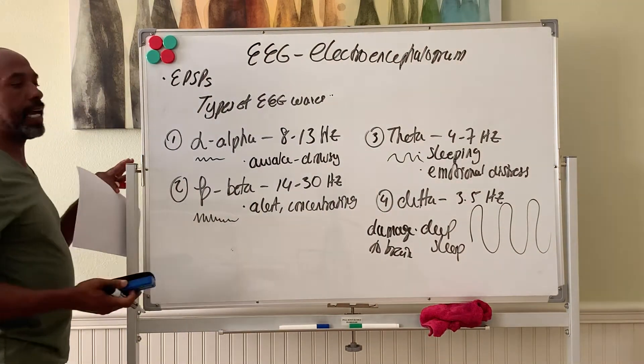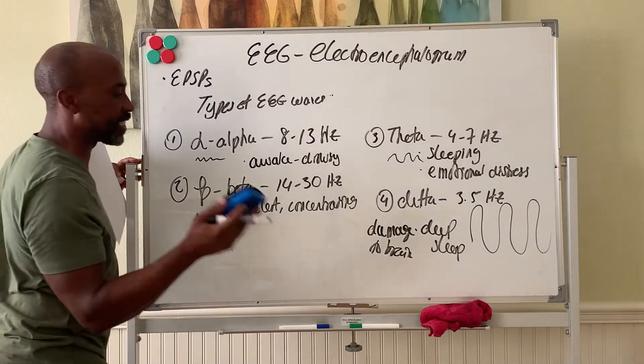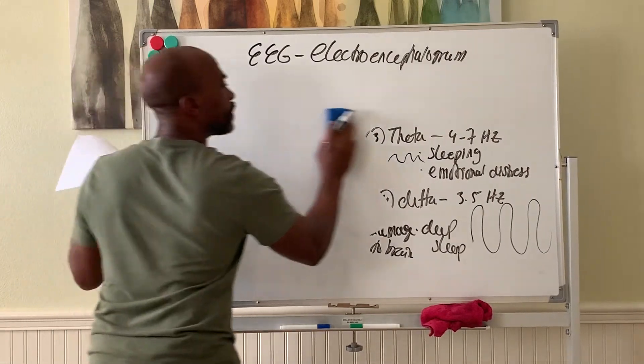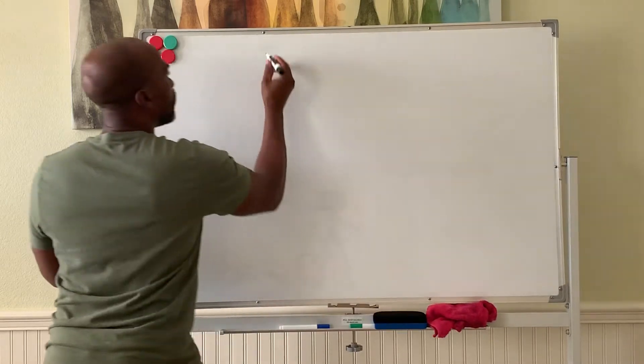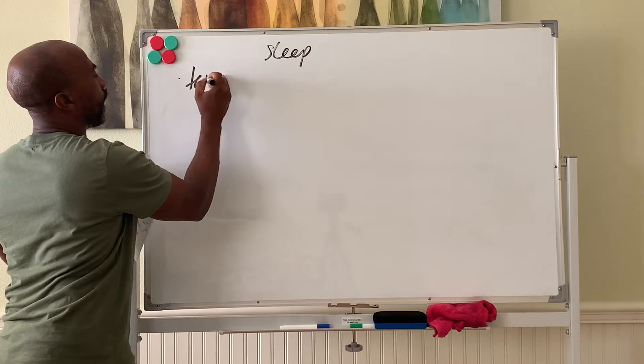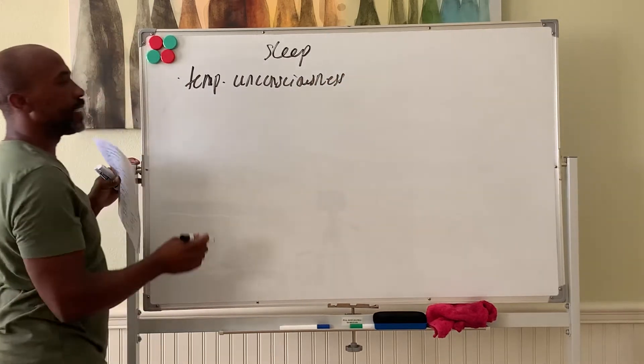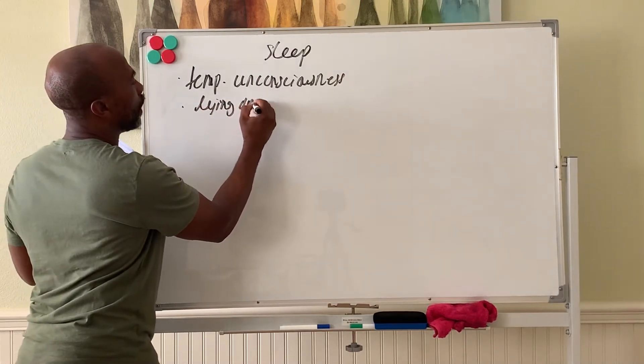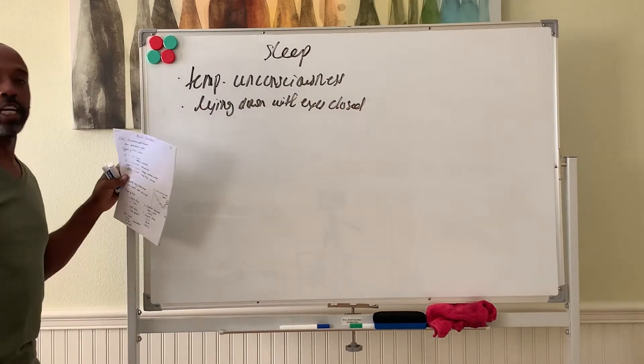Now we use EEG as a convenient way to assess where you are in your sleep cycle. So let's look at sleep. Sleep really is a state of temporary unconsciousness, but you can be awakened from it. It's done best lying down with eyes closed. That's the best way to sleep.